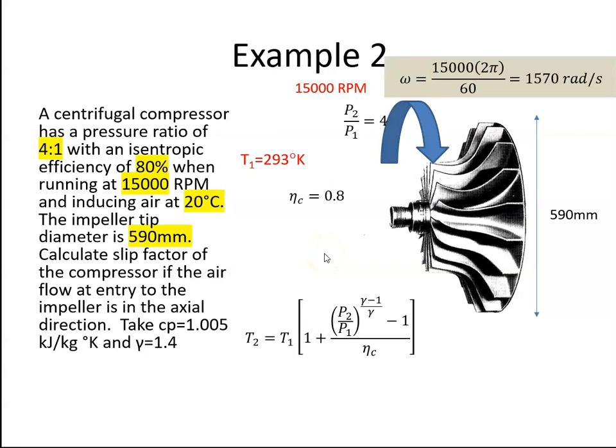So the first thing we're going to do is calculate omega. Omega is the 15,000 RPM divided by 60 multiplied by 2 pi, and that's 1,570 radians per second.